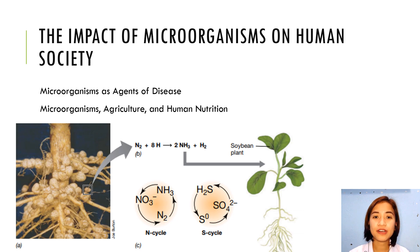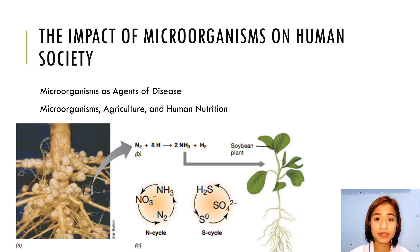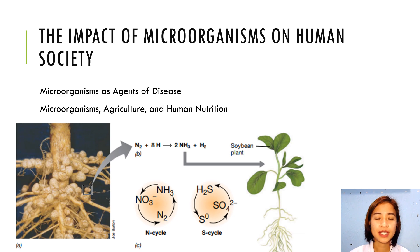The Impact of Microorganisms on Human Society — Microorganisms as Agents of Disease. At the beginning of the 20th century, the major causes of human death were infectious diseases caused by bacterial and viral pathogens. In those days, children and the aged in particular succumbed in large numbers to microbial diseases. Today, however, infectious diseases are much less deadly, at least in developed countries.